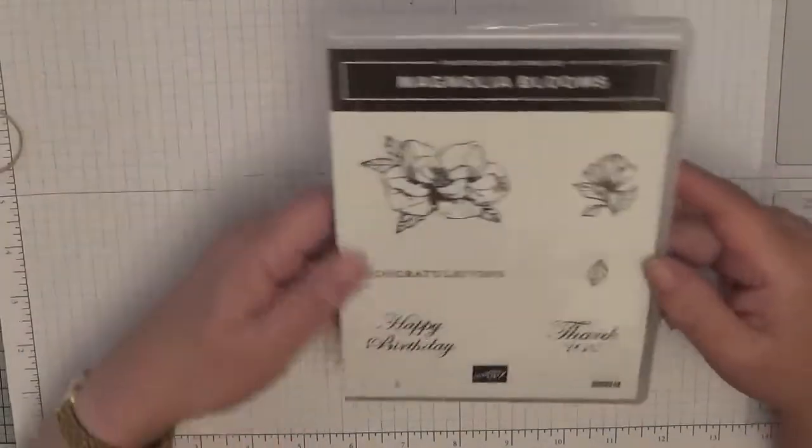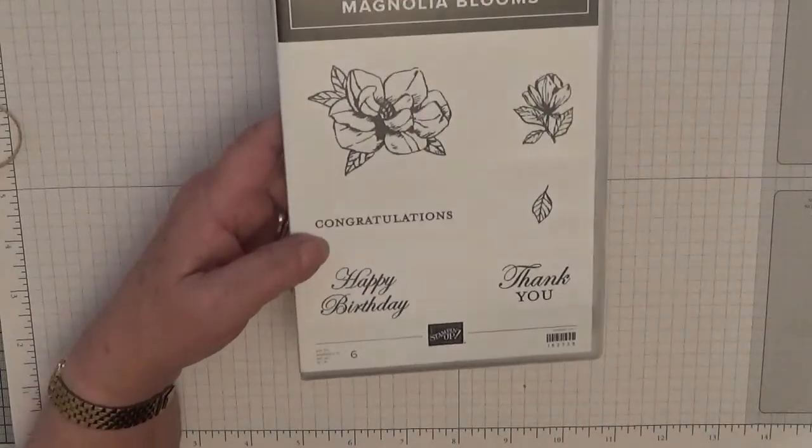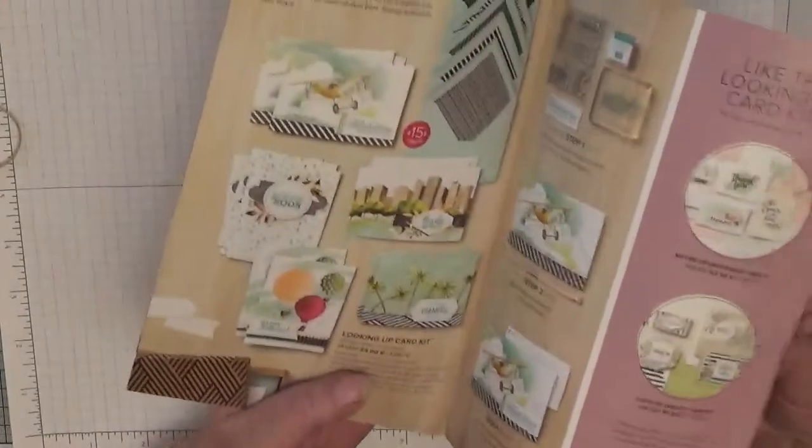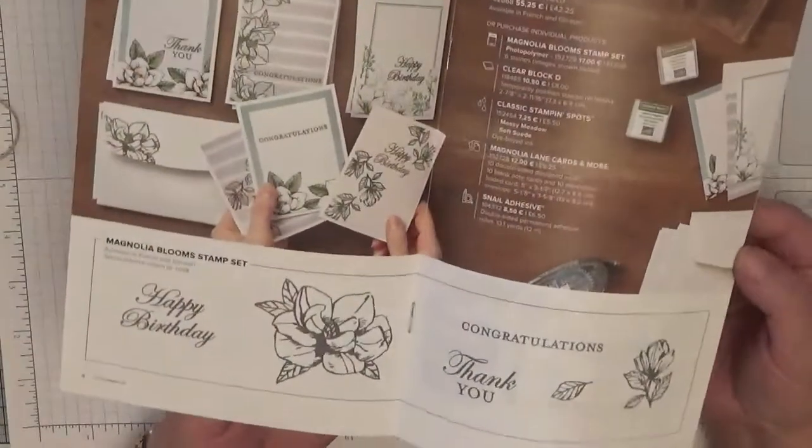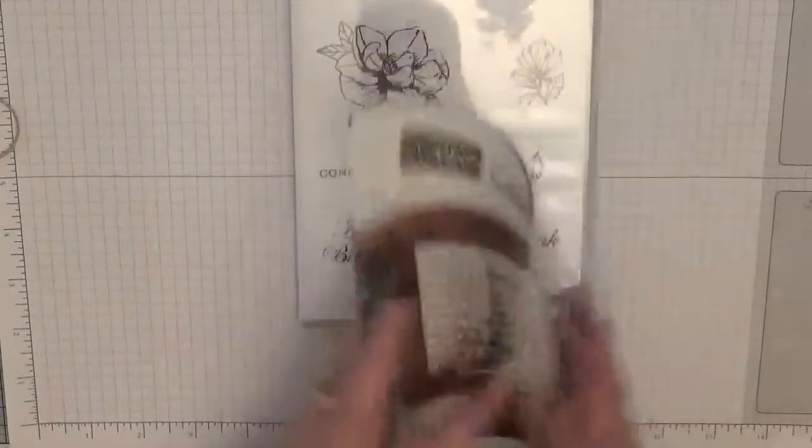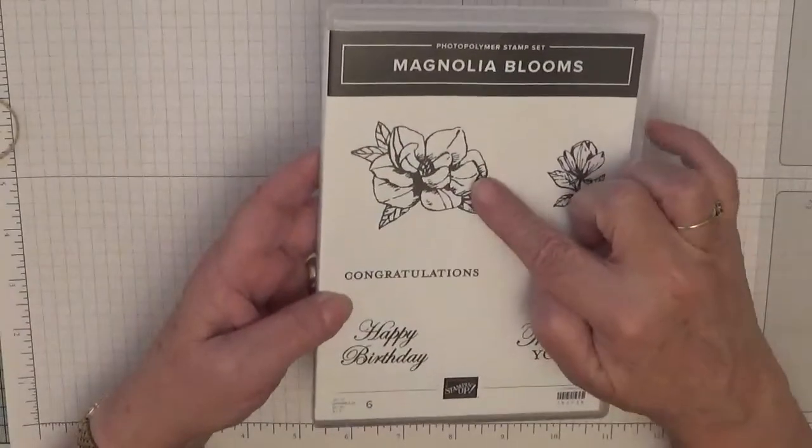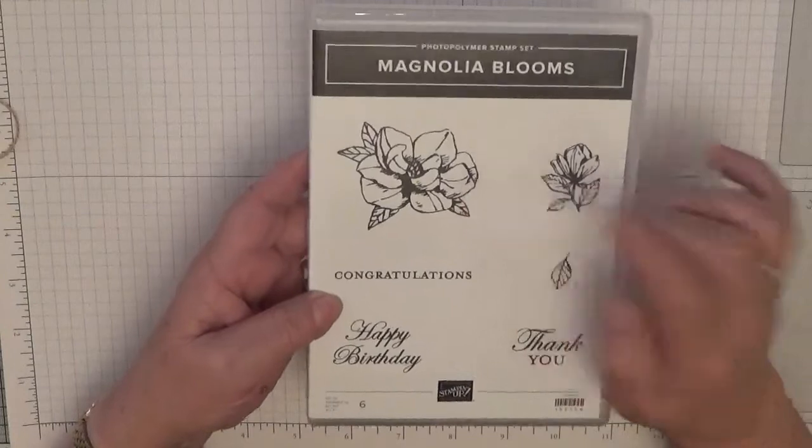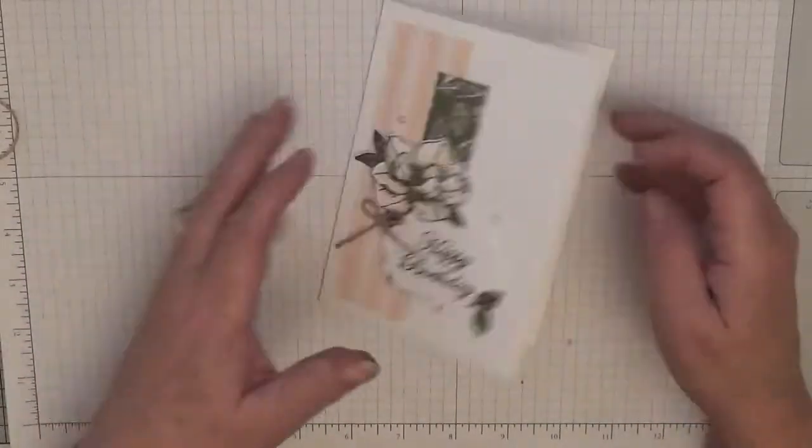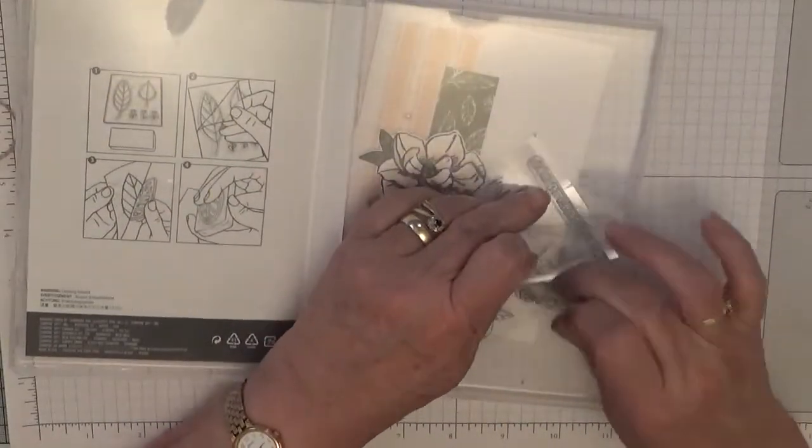To make this card I have got this photopolymer set Magnolia Blooms and it is out of a booklet Experience Creativity and it's more like for beginners. I ordered the Magnolia one because I do like the flowers and I'm going to be using the Magnolia flower, the happy birthday and the leaf. We'll be using the bud as well.